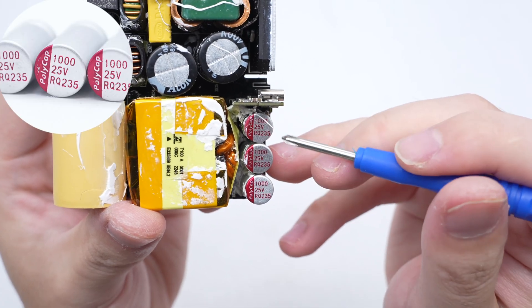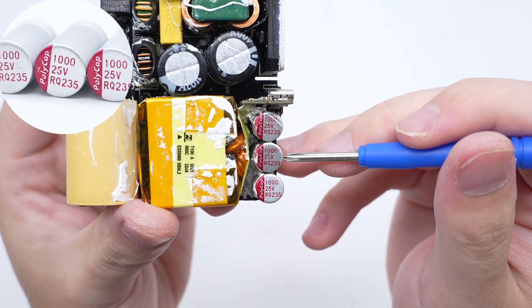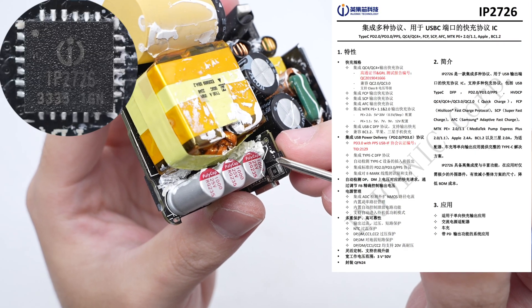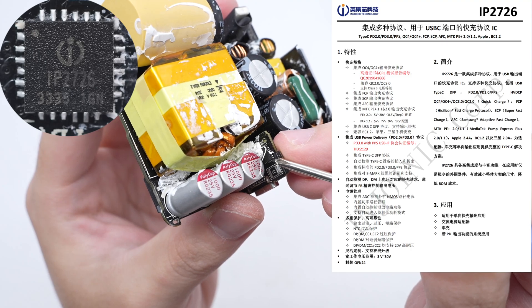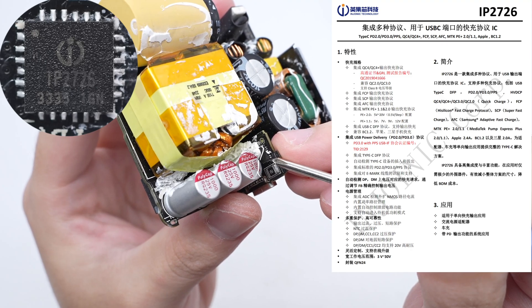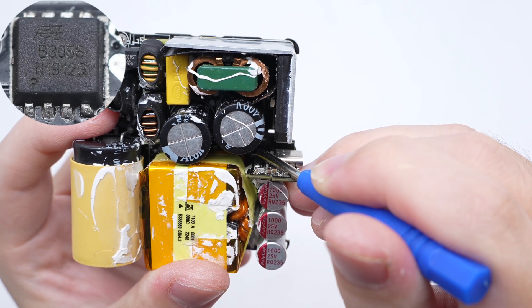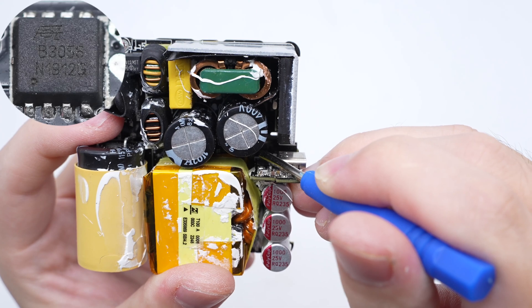The three solid capacitors for output filtering come from Polycap. 25 volts 1000 microfarad. The protocol chip is from Injoinic. It integrates multiple protocols for fast charging of USB output ports. The V-Bus MOSFET for output is from Feitech and adopts PQFN 3x3 package. 30 volts 3.9 milliohms.